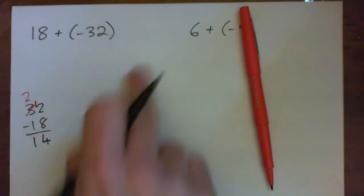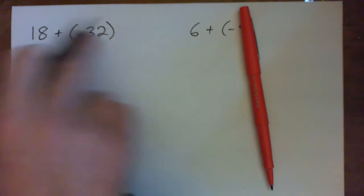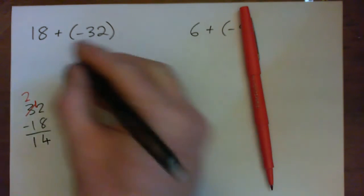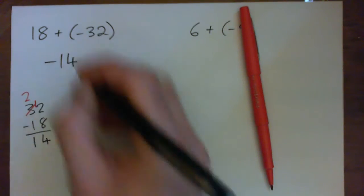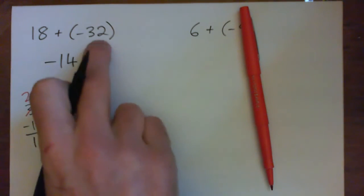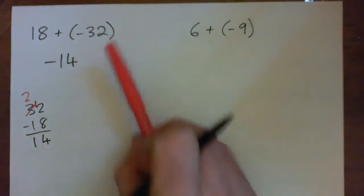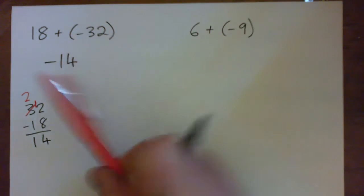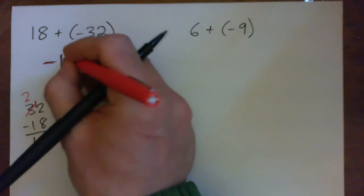But that should be a negative, so the difference is 14, but it should be a negative 14. Because we've got 32 bad guys and 18 good guys, so combine them, we get 14 bad guys. Or $18 cash and a $32 debt gives you a $14 debt. You're $14 in the hole.